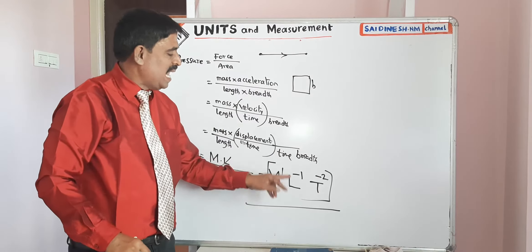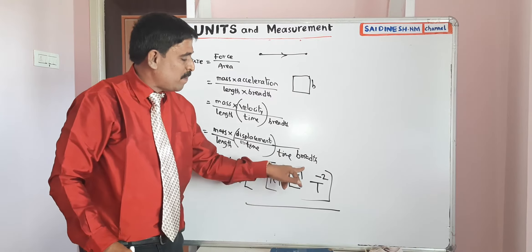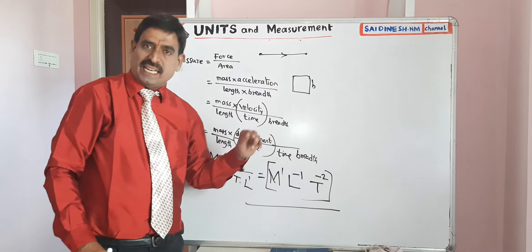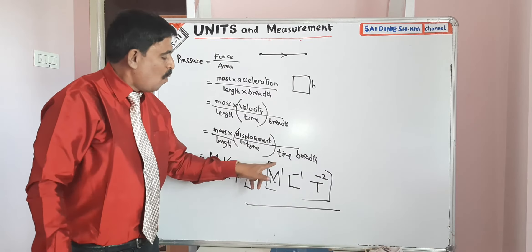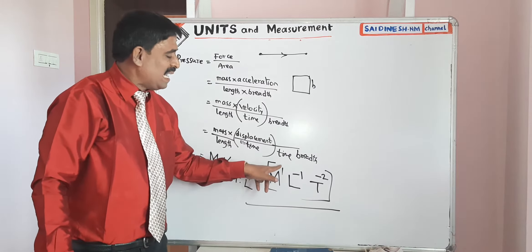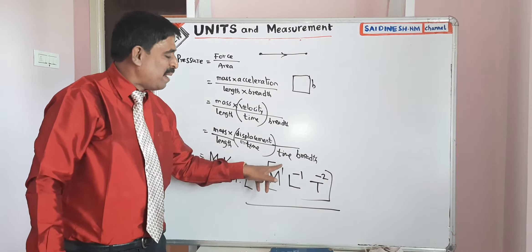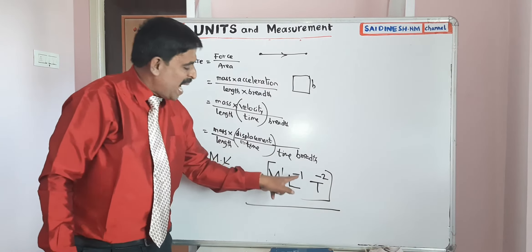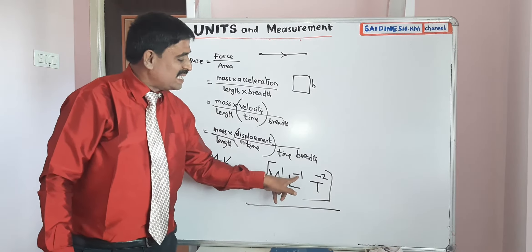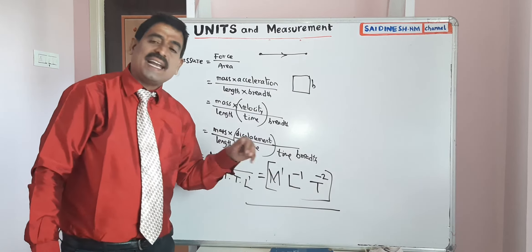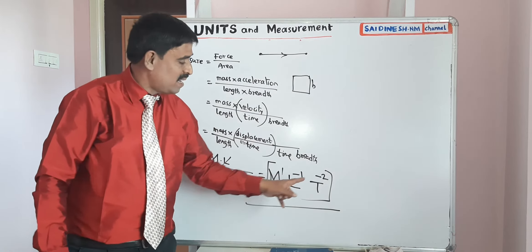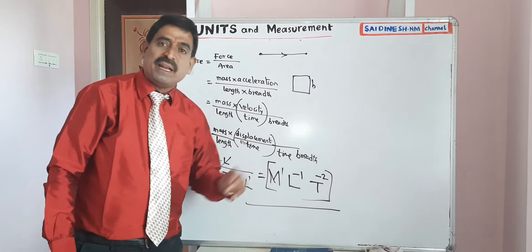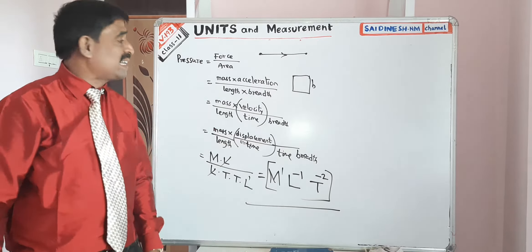The result is M power 1, L power minus 1, T power minus 2. So 1 is the dimension in mass, minus 1 is the dimension in length, and minus 2 is the dimension in time.